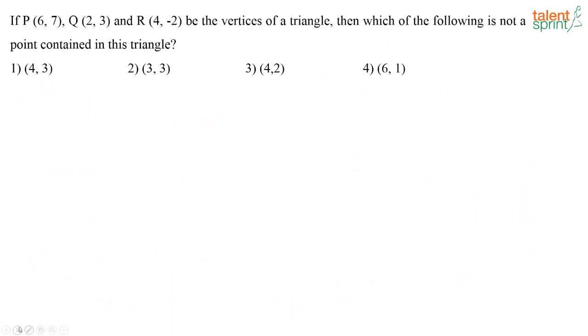If p, q and r be the vertices of a triangle, then which of the following is not a point contained in the triangle? So you have a triangle here, p, q and r. Let us try to represent these points in a coordinate system.